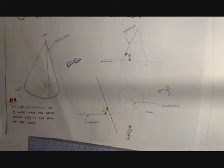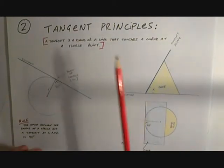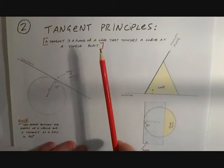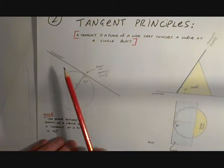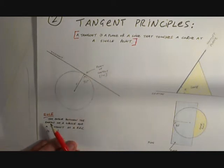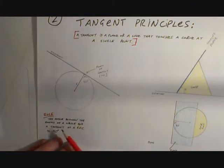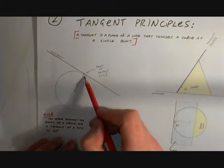This is the first basic principle towards finding the oblique cone method. The second principle we need to know is the tangent principle. A tangent is a plane or a line that touches a curve at a single point. Here we can see an example of a circle and a tangent to a circle.